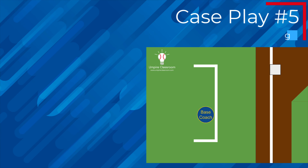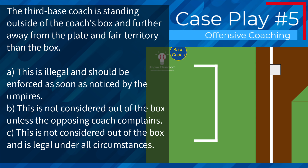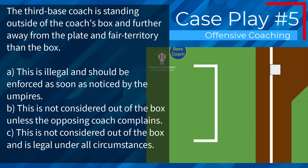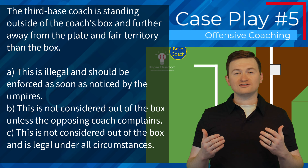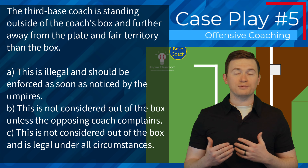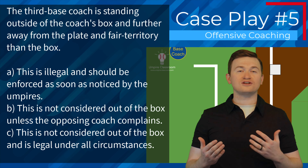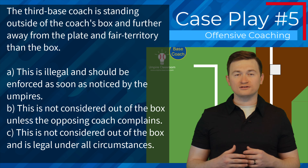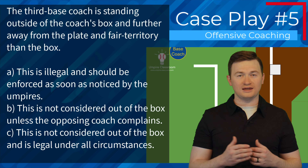Case play number five: the third base coach is standing outside of the coach's box and further away from the plate and fair territory than the box. Is this A, illegal and should be enforced as soon as noticed by the umpires; B, not considered out of the box unless the opposing coach complains; or C, not considered out of the box and legal under all circumstances? The correct answer is B — they are not considered out of the box unless the opposing coach complains. If the opposing coach does complain, we will enforce it on both teams.